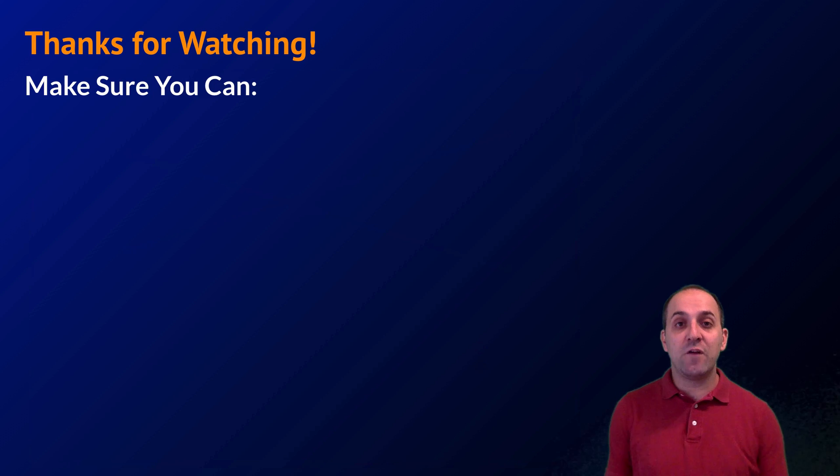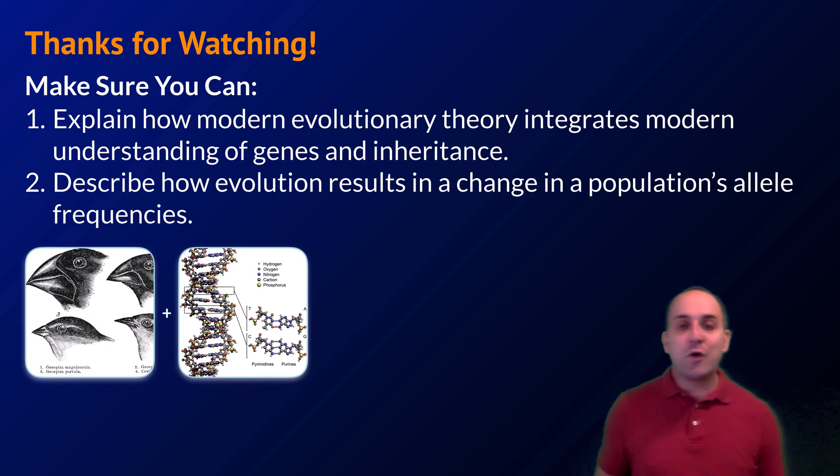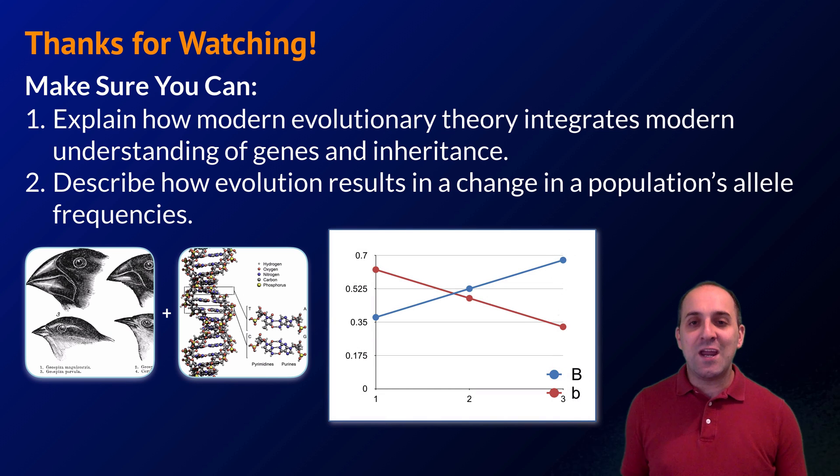Thanks so much for watching our discussion of the modern synthesis. Make sure you can do the following things here at the end. Make sure you can explain how modern evolutionary theory integrates our modern understanding of genes and inheritance. Also make sure that you can describe how evolution results in a change in a population's allele frequencies. If you can do those, you're doing great. If not, that's okay too. Take a moment and write down any questions that you have so that you can get the answers that you need. Thanks again for watching. I really appreciate it. Have a great day.